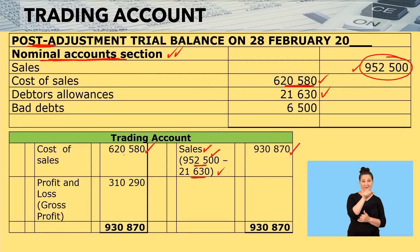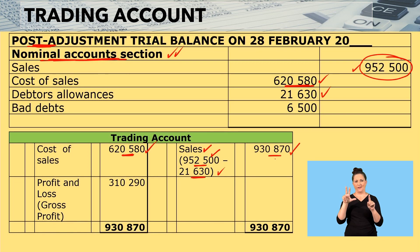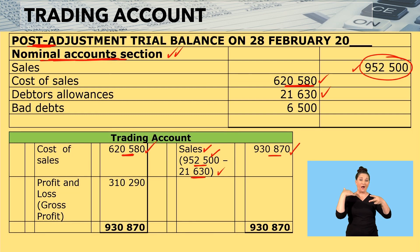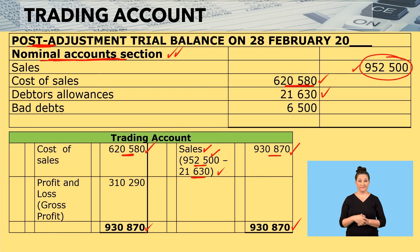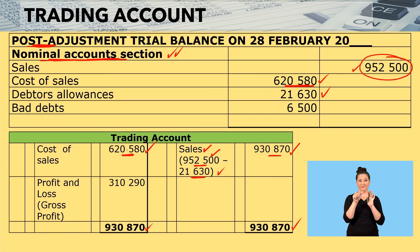The next thing you do is look for the side with the highest amount. Here you have 620,580 on the debit side, but on the credit side you have 930,870. The highest amount is 930,870, so you bring it down to balance both sides at 930,870. Then 930,870 minus 620,580 — that is how you get your gross profit.